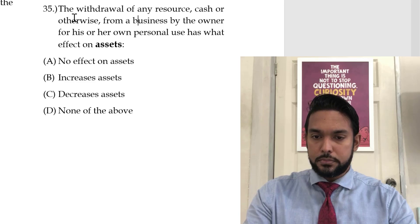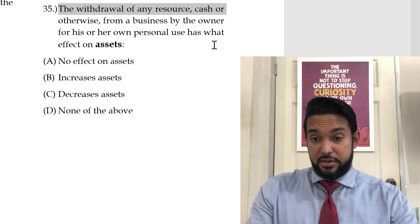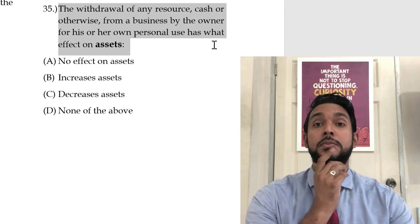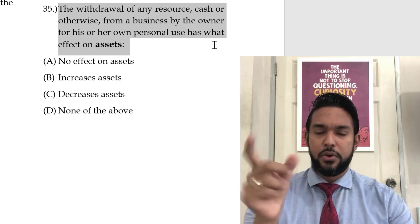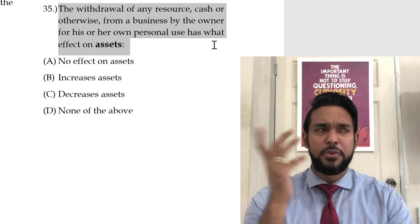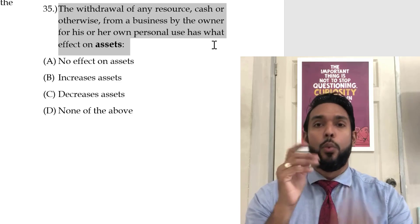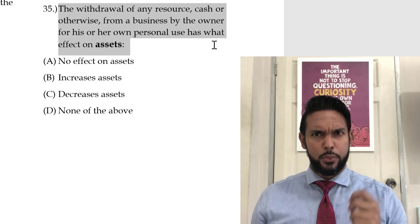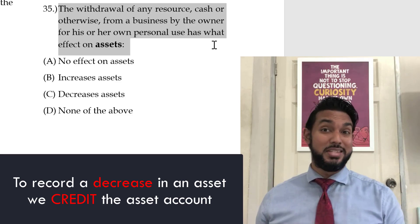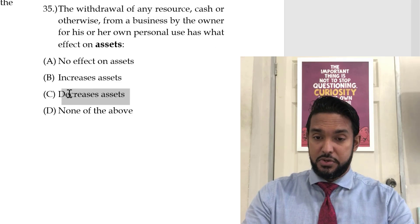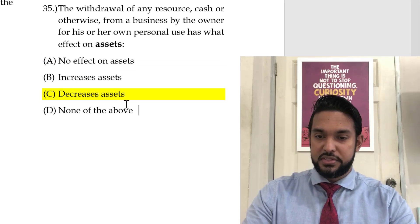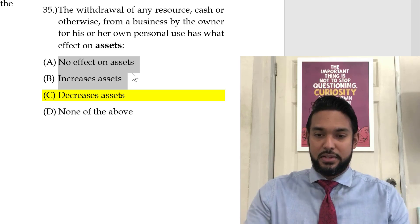Number 35: The same scenario — the withdrawal of a resource by the owner — has what effect on assets? Resources are another word for assets — synonyms. The owner has taken out something, so aren't assets decreasing? Think about the double entry if you took out cash: debit drawings, credit cash. When you credit the cash account, you are decreasing the balance in the cash account. Cash is an asset, and if you credit it, you are decreasing the balance. So the answer is: decrease in assets.